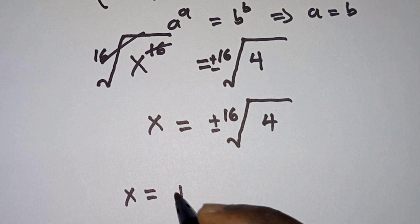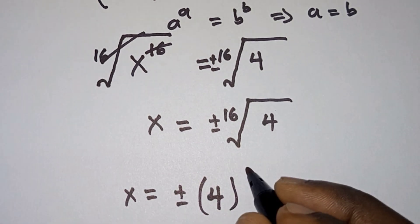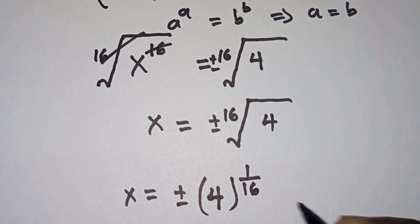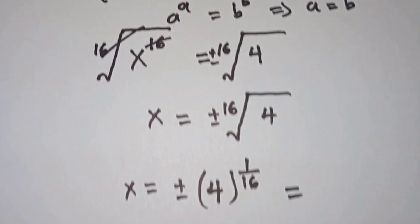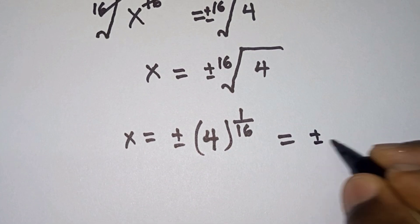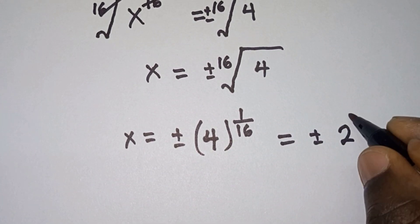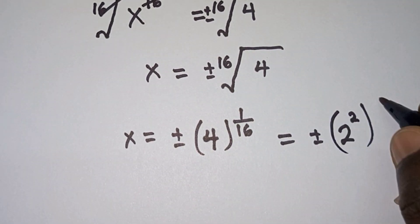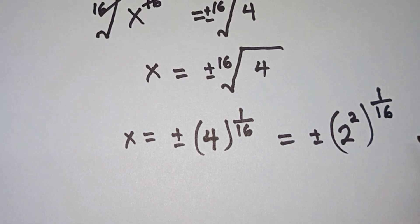And now we have x is equal to plus or minus the 16th root of 4, which could be written as 4 to the power 1 over 16. And we can also simplify this further. We have plus or minus, where 4 is the same as 2 to the second power, to the power 1 over 16.